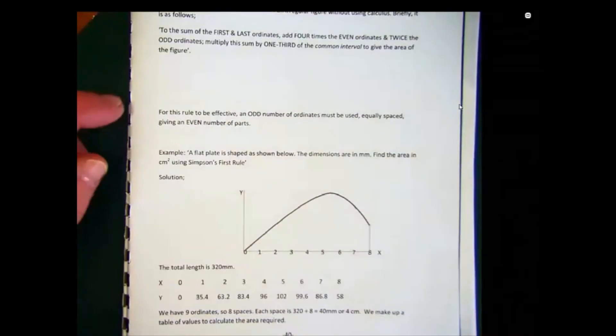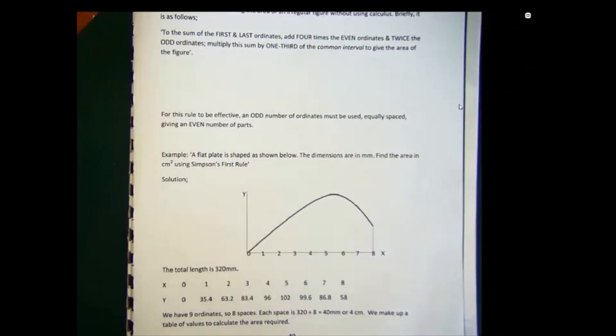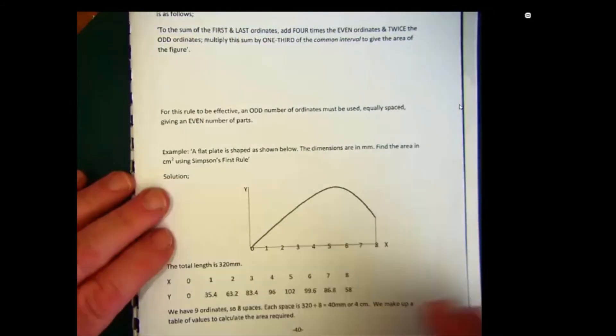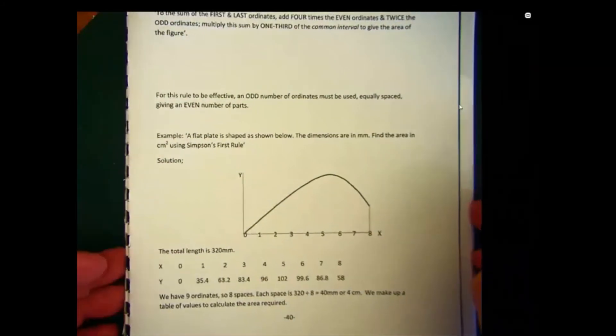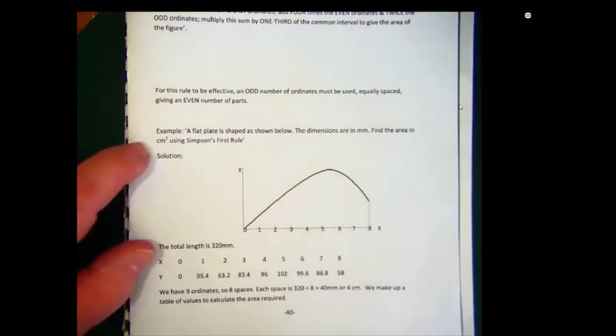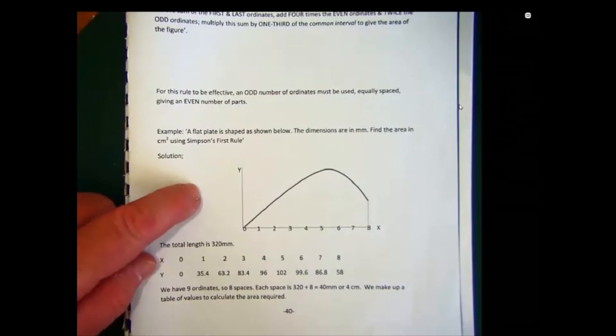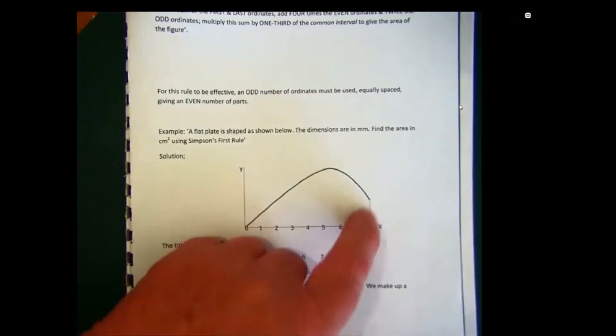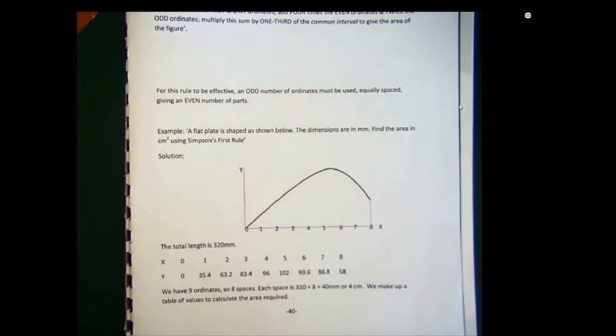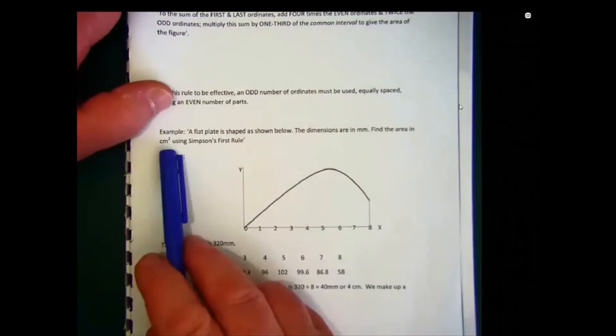Then the English meaning becomes quite clear. First of all, for this rule to be effective, an odd number of ordinates is used. That gives you an even number of parts. So here's a classic problem which is a good example to study. The examiner has given me this one. A flat plate is shaped as shown below. So there's a curved part and it's cut off at x equals 8. It's been sliced off. The dimensions are in millimeters. We've been asked to find the area in square centimeters. So we've got to watch that. There's a change of units there using Simpson's first rule.